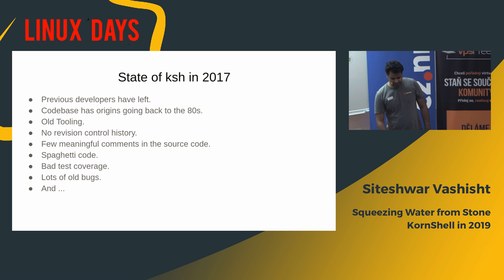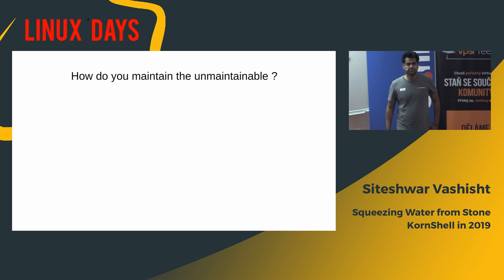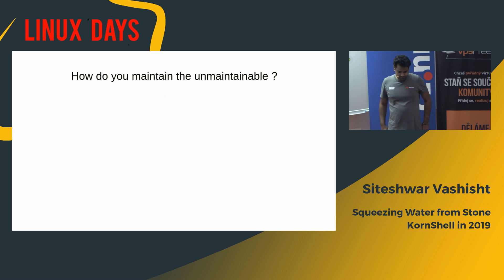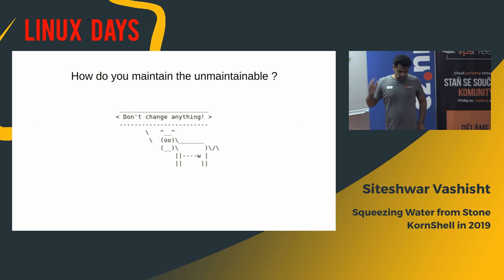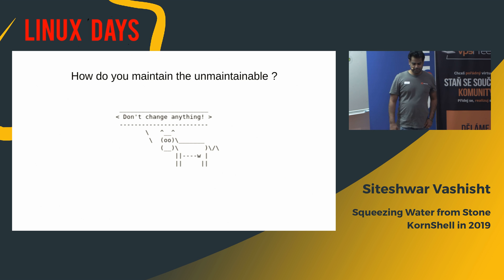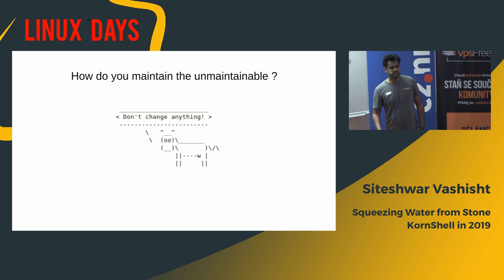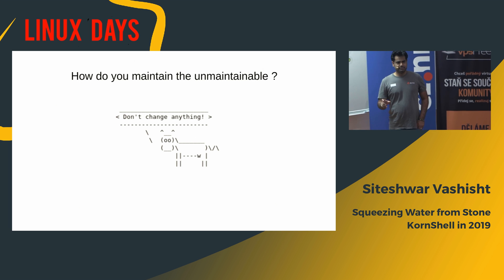It's a very tough situation to be in. So how do you deal with it? How do you maintain the unmaintainable? The answer is simple: you don't change anything. This approach sounds a bit hilarious, but it sort of works in practice. Because if you care about stability and your test coverage is bad and the code is extremely tricky and no one understands it — if you try to fix bugs, it's very likely you will introduce new regressions.